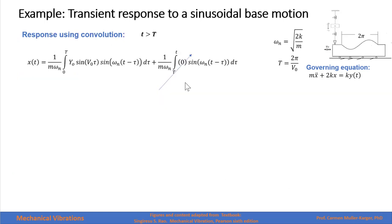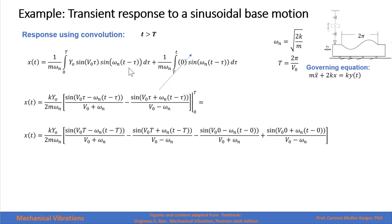Now let's find the response for t greater than the period. The system has passed the sinusoidal wave, so we integrate the forcing function from zero to the period; from the period to a general time the function is zero, making that integral zero. We integrate using the same approach — converting the product of two sine functions into the subtraction of two cosine functions — and integrate to get sine functions. The key difference from the previous case is that the limits of integration run from zero to the period, not to a general time t.